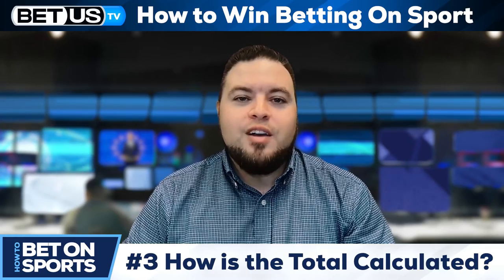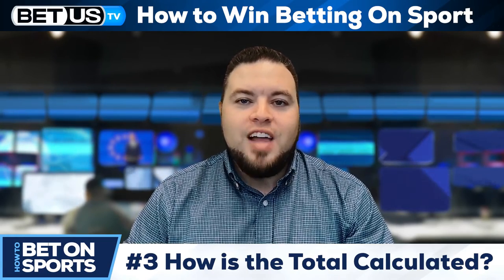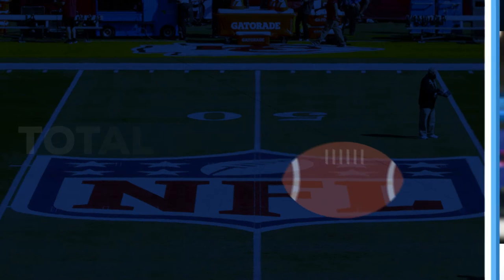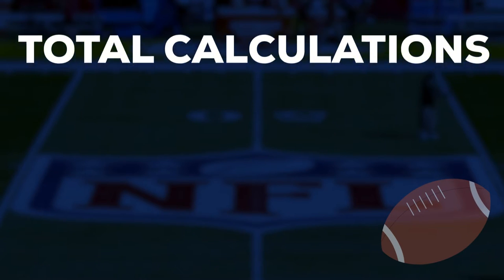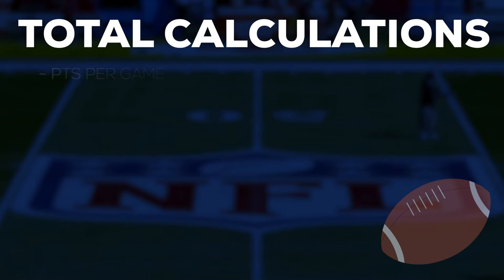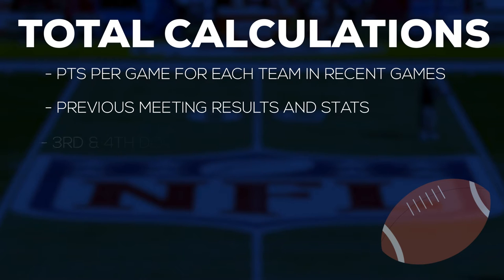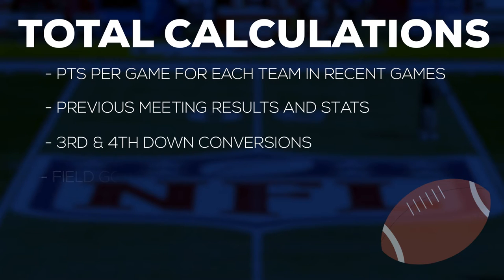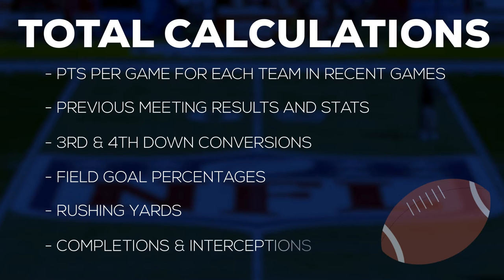The way totals are calculated varies from sport to sport. For football, specifically the NFL, total calculations include a lot of statistical considerations: points per game for each team in recent games, previous meeting results and stats, third and fourth down conversions, field goal percentages, rushing yards, completions and interceptions. You can also look at more recent analytics, including points per play combined with pace of play.